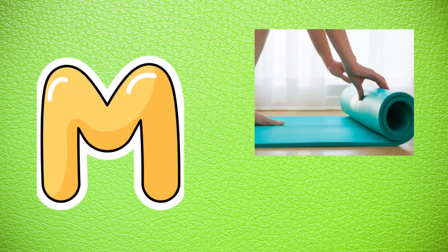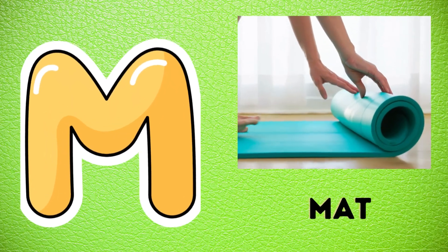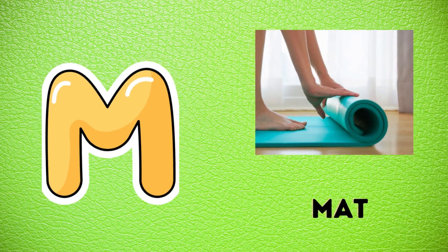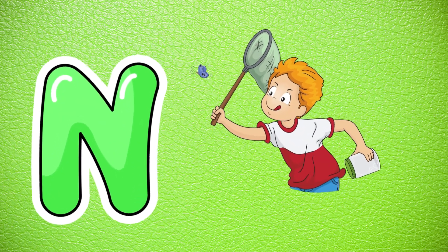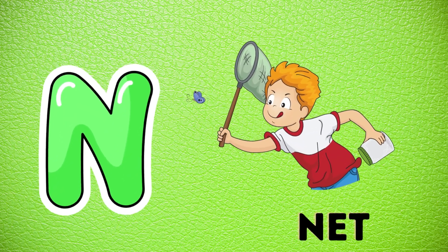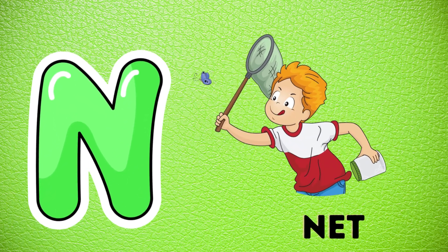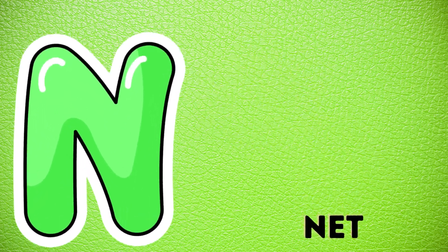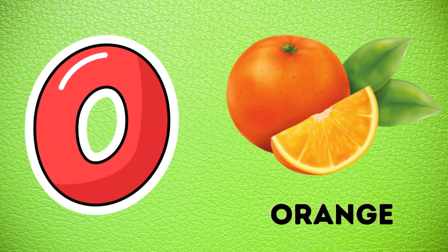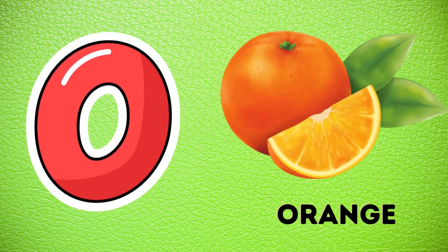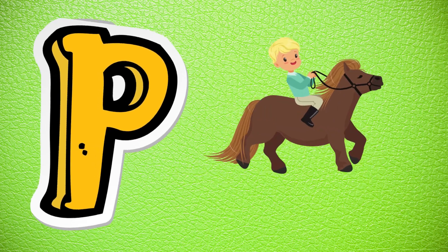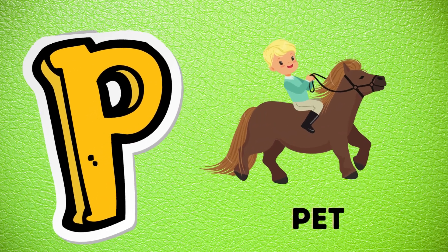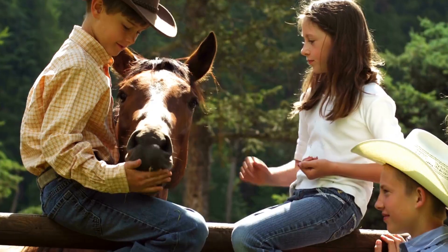M is for mat, m-m-mat. N is for net, n-n-net. O is for orange, o-o-orange. P is for pet, p-p-pet.